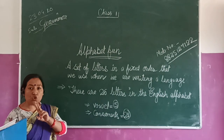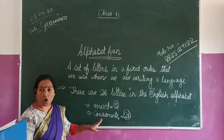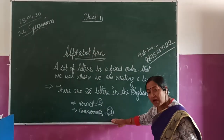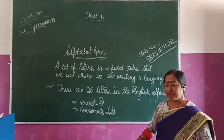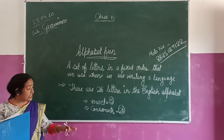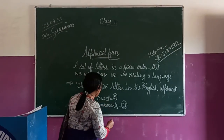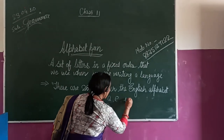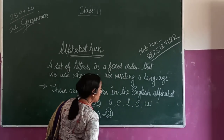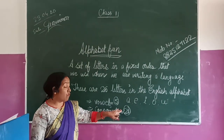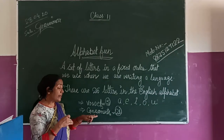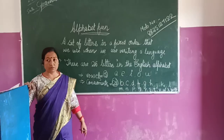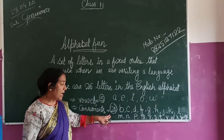And they are categorized in two ways. One is vowels and the other is consonants. There are 26 letters — 5 vowels in English and 21 consonants. Vowels are letters that sound different. The vowels are A, E, I, O, U. These are vowels. The remaining letters are called consonants.